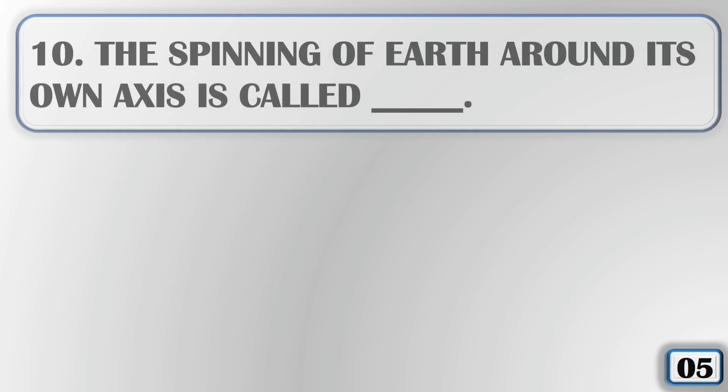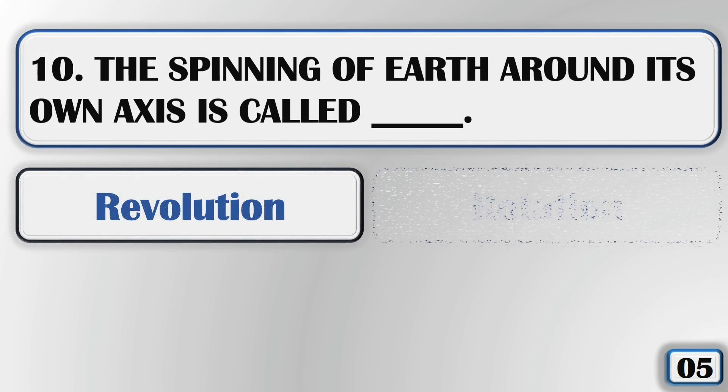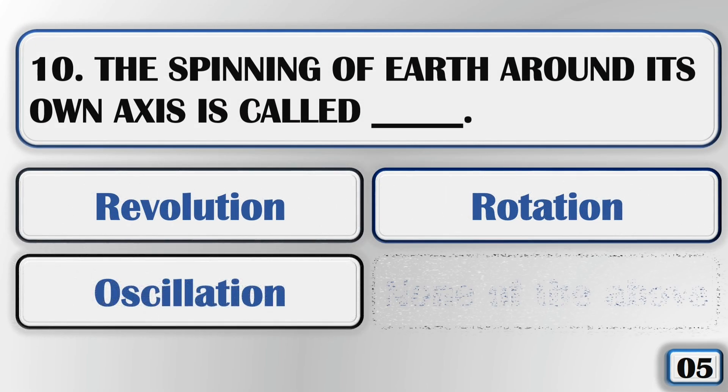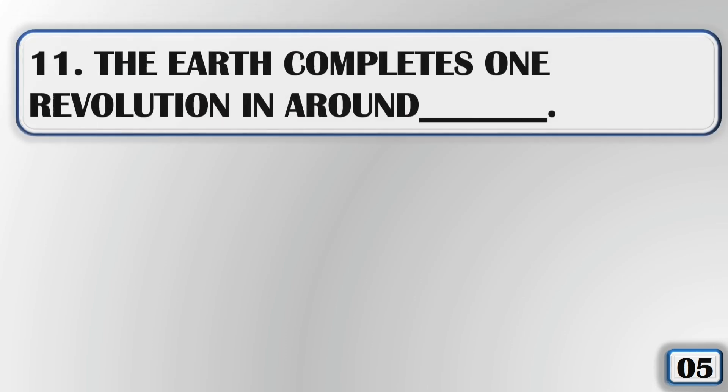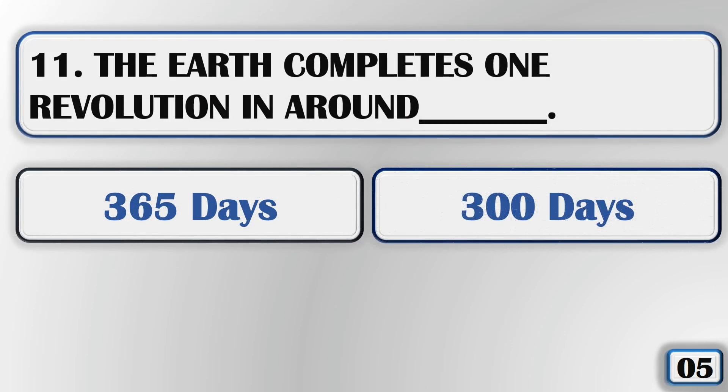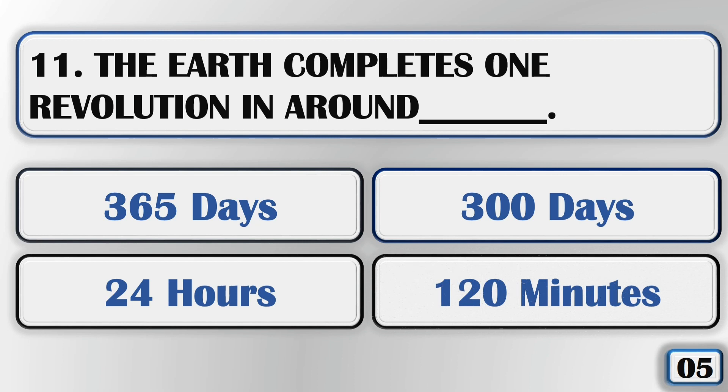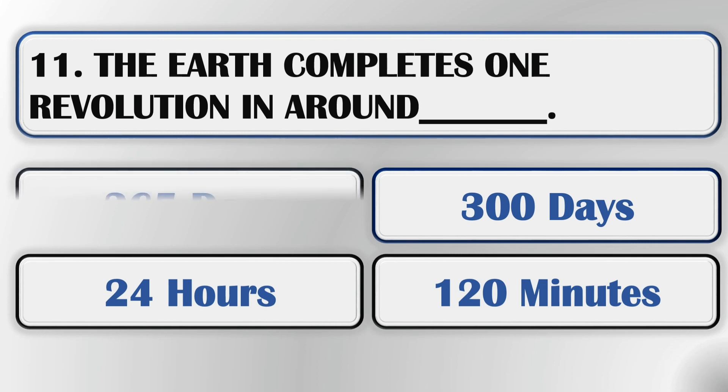The spinning of Earth around its own axis is called rotation. The Earth completes one revolution in around 365 days.